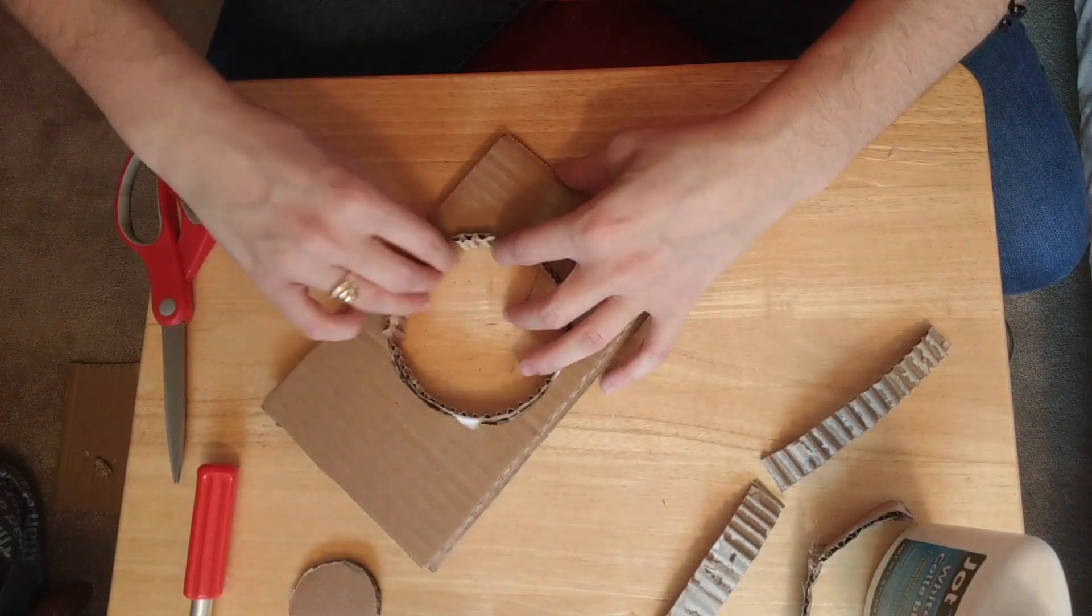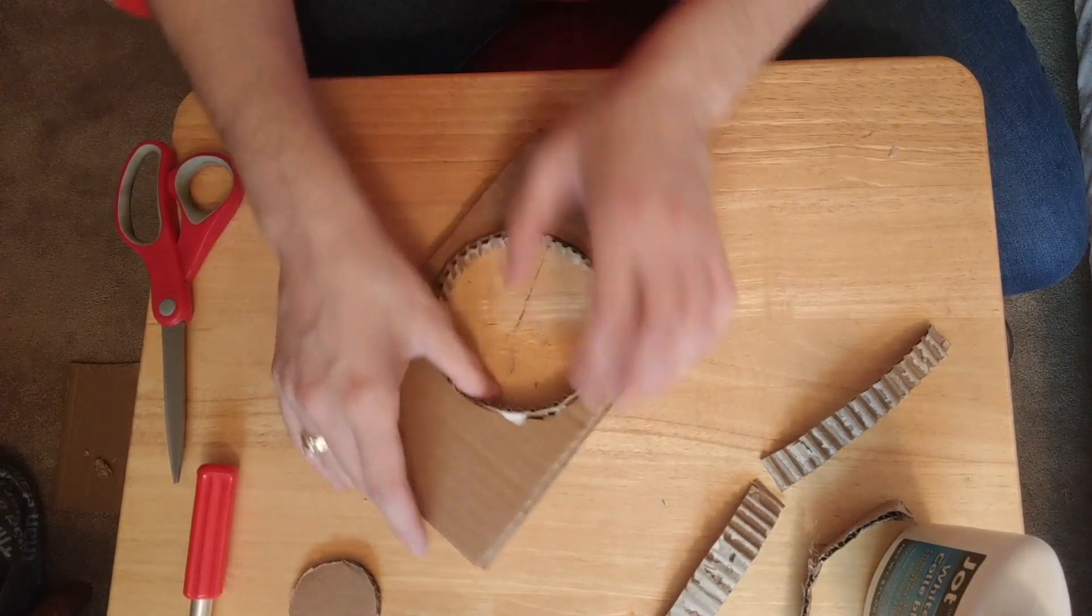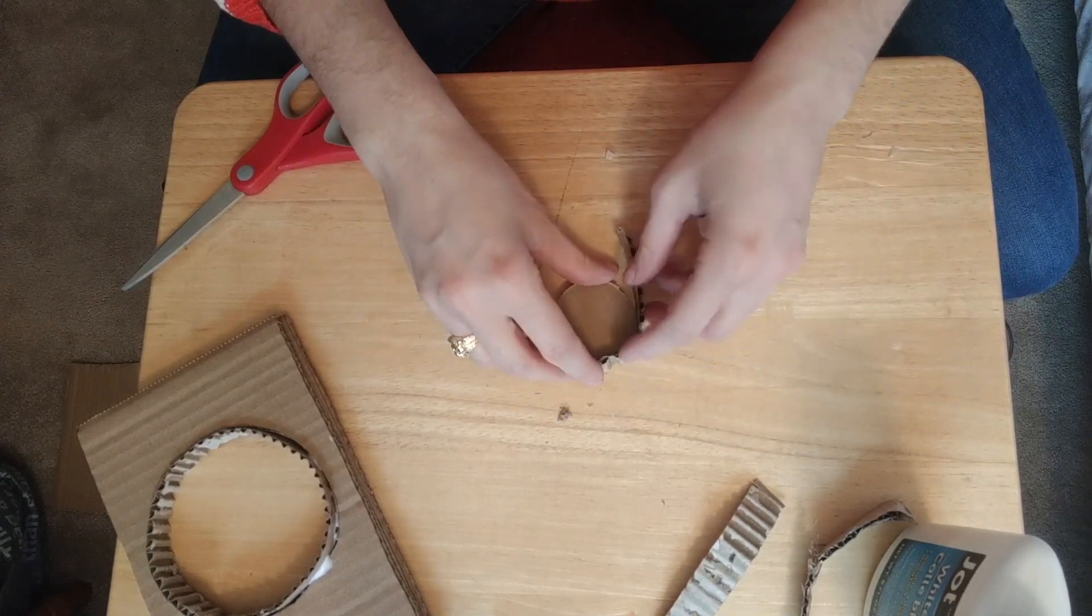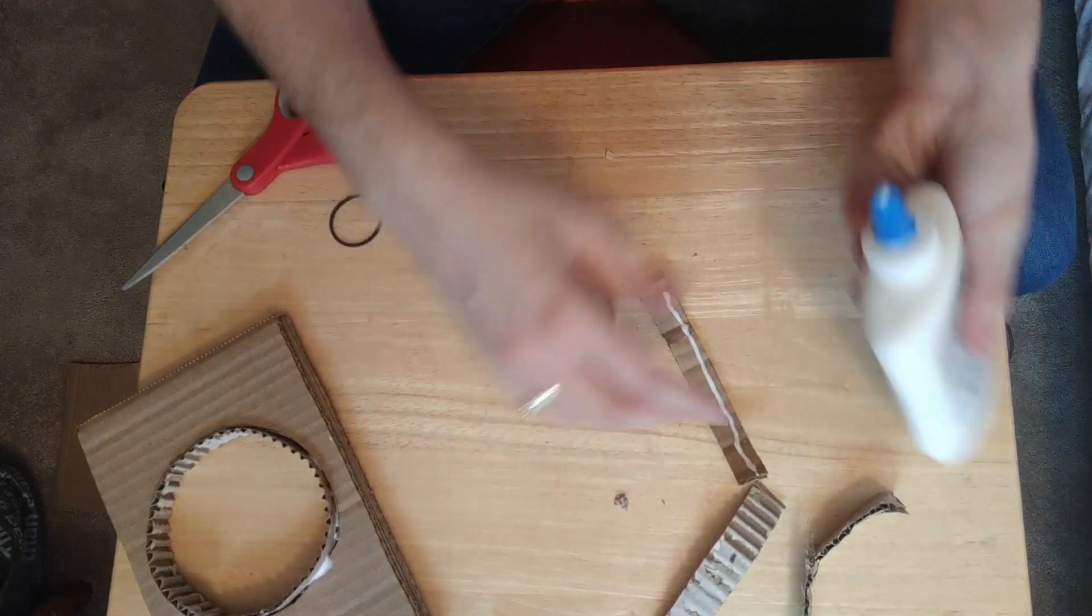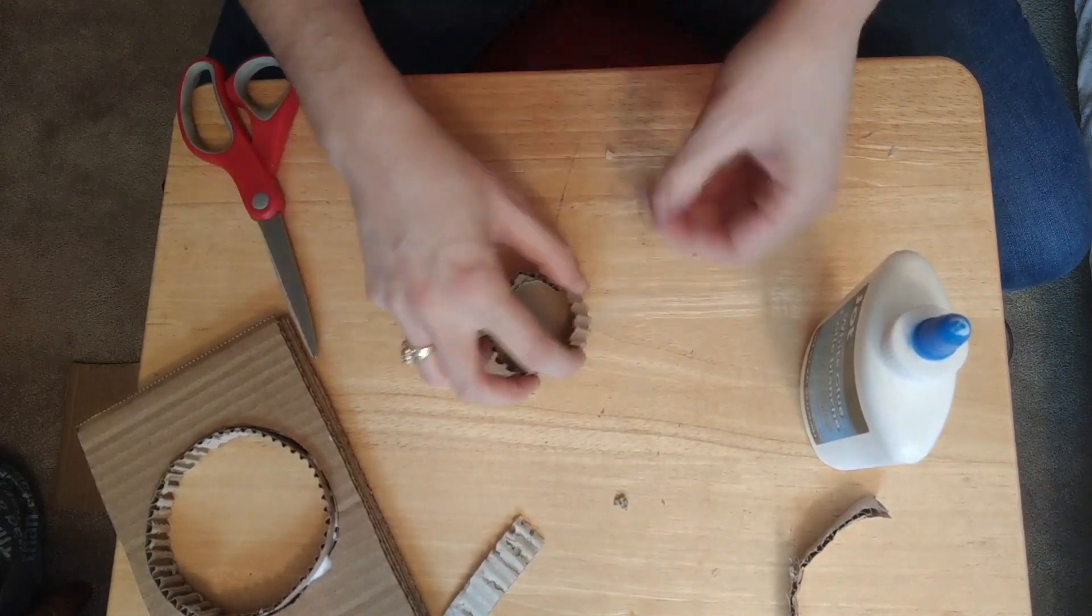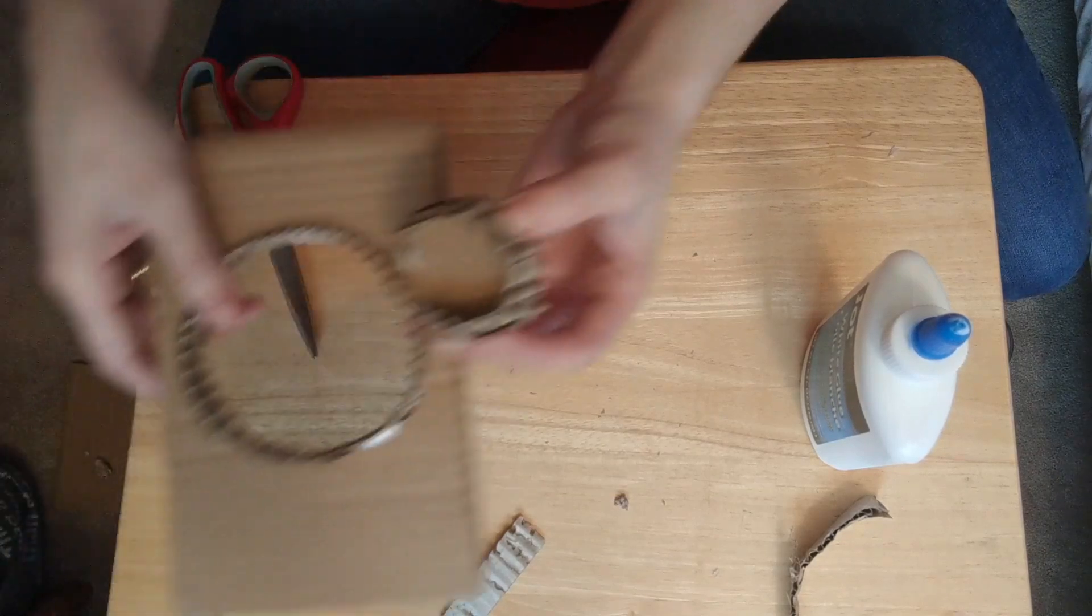So our outside circle is good and we just want to set that aside to dry. And now we want to put this around the outside of this circle, but I'm gonna use an elastic to help keep this on while it dries. This one has to sit and dry.